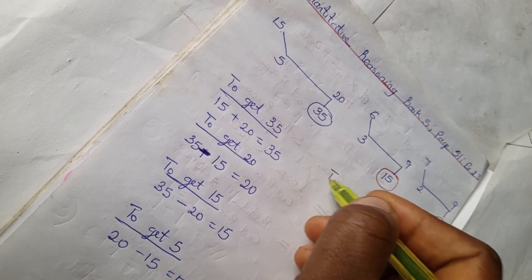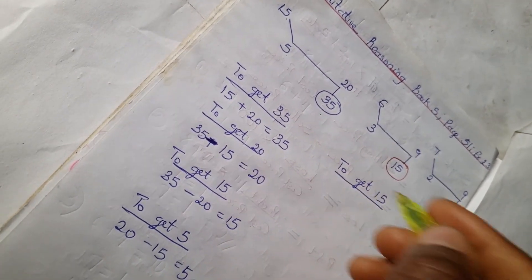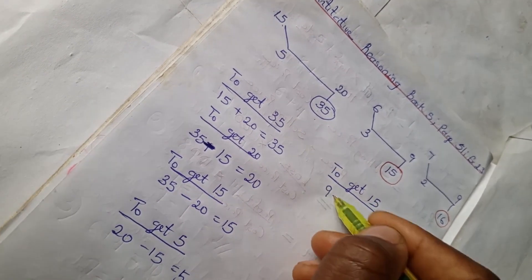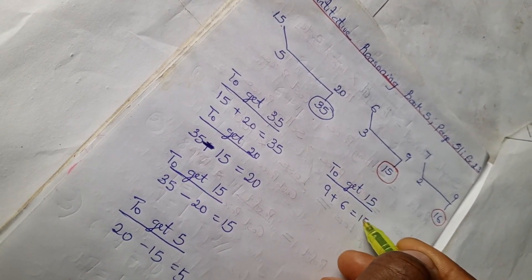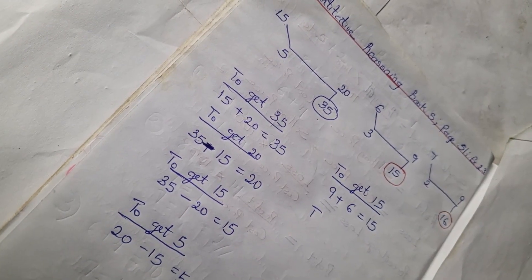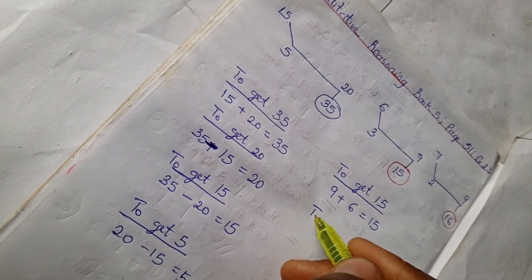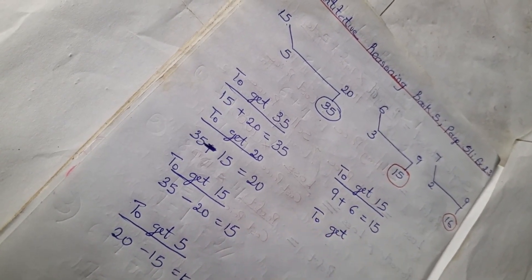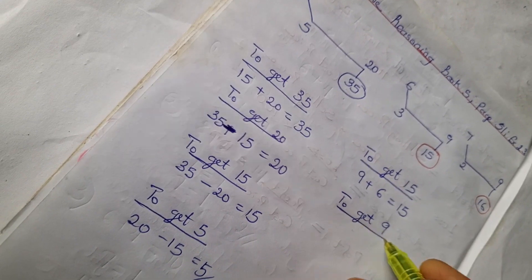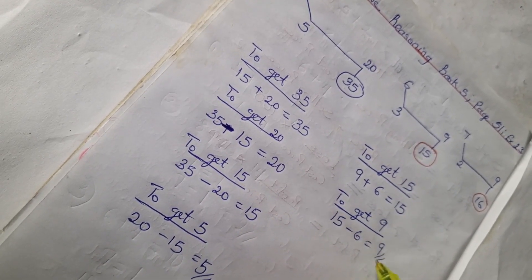Let's work with example 2. To get 15, we have 9 plus 6 is 15. To get 9, we have 15 minus 6 is 9.